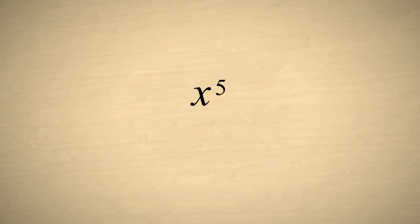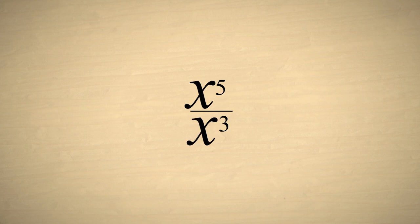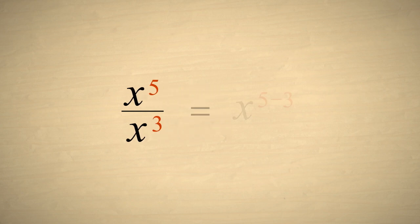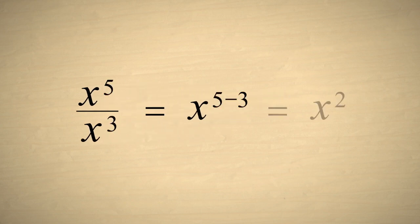We can use this last rule to simplify exponential expressions with divided terms. For example, let's simplify x to the fifth power divided by x cubed. Since these two exponential terms have the same base, x, we can subtract their exponents, which gives us x squared.